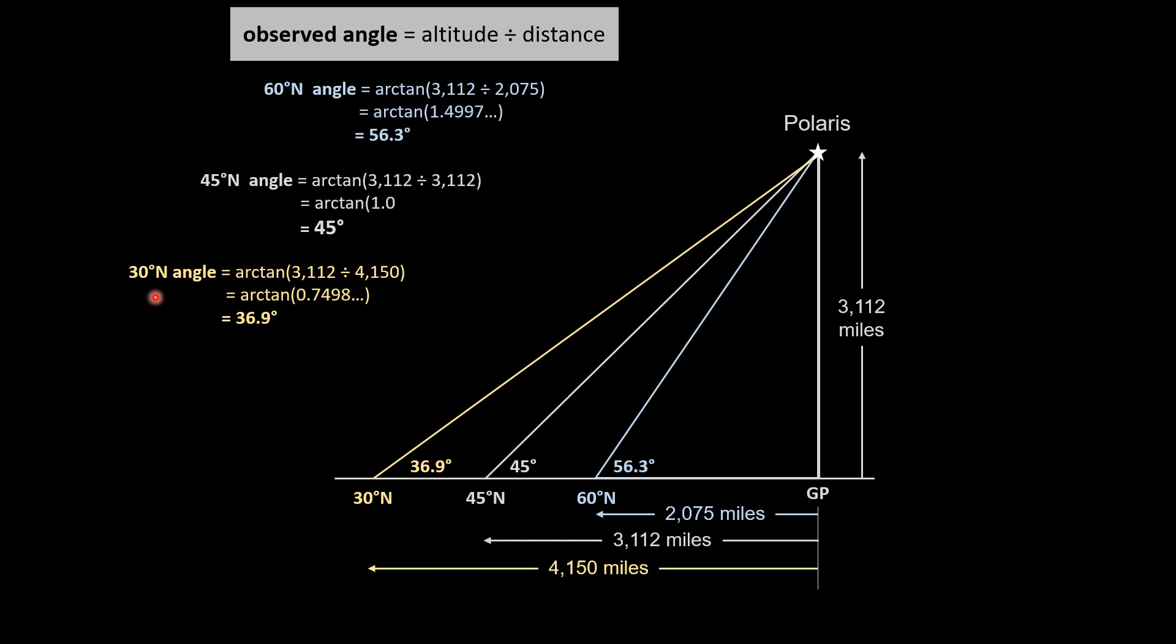At 30 degrees latitude, Polaris should be 30 degrees above the horizon, but it is 36.9 degrees.